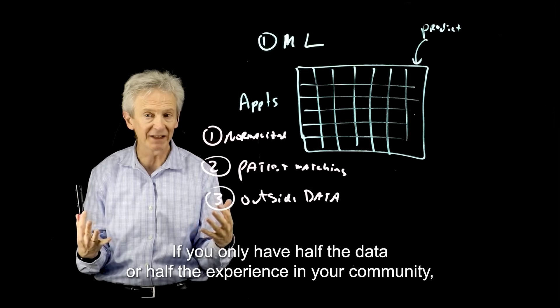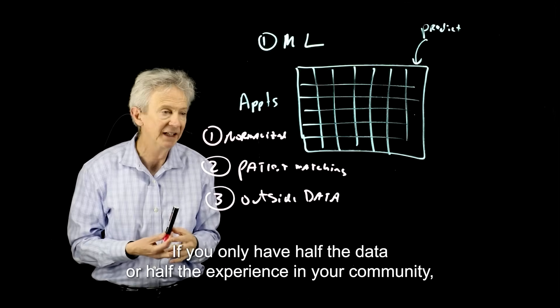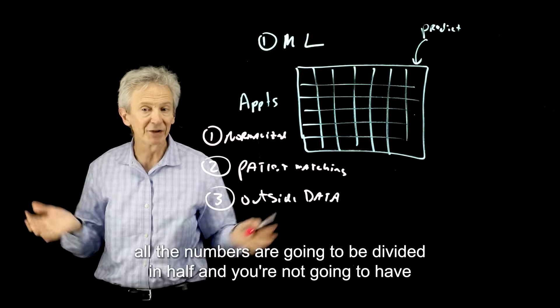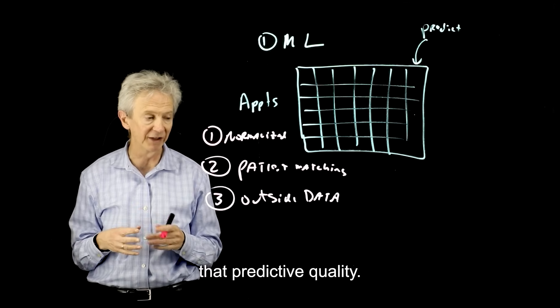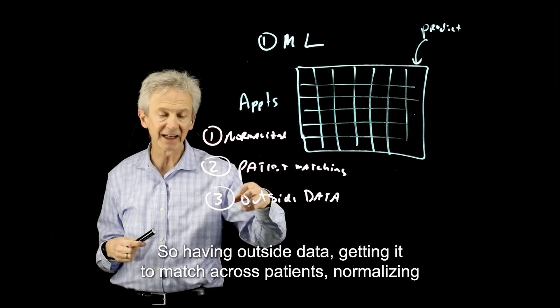If you only have half the data or half the experience in your community, all the numbers are going to be divided in half and you're not going to have that predictive quality. So having outside data, getting it to match across patients, normalizing it really makes your models way better when you train them.